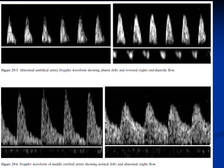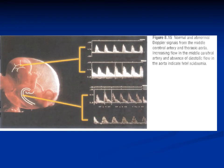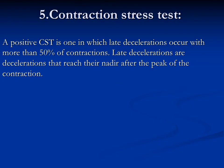Umbilical artery Doppler may show absent or reversed diastolic flow. The middle cerebral artery normally has high resistance to protect the brain from excessive blood flow. In fetal growth restriction, vasodilatation occurs in brain vessels, increasing diastolic flow in the middle cerebral artery. If the middle cerebral artery shows increased flow while the umbilical artery shows reduced or absent flow, this indicates fetal acidemia.